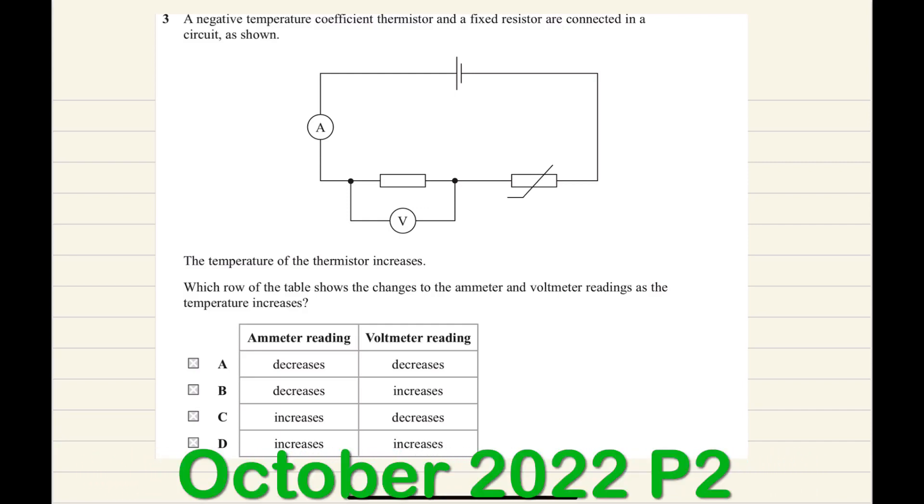The question is about a negative temperature coefficient thermistor and a fixed resistor connected in a circuit as shown. The temperature of the thermistor increases.